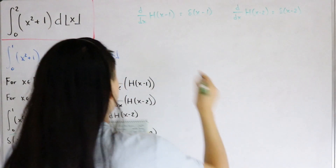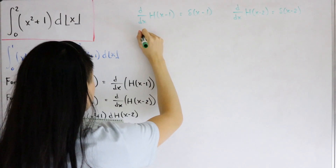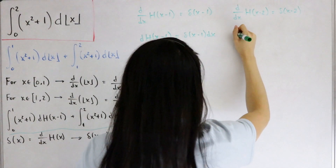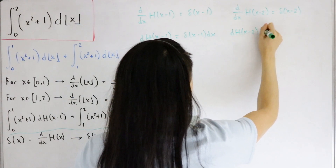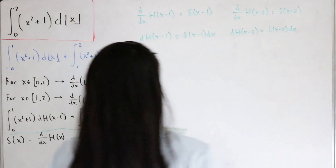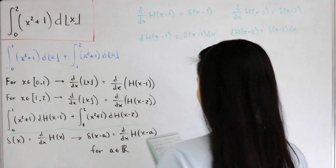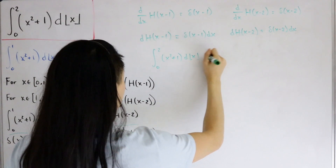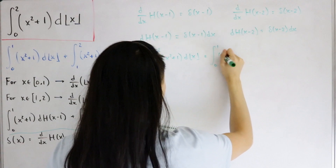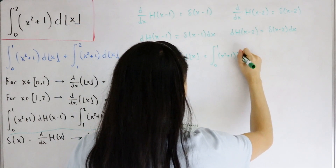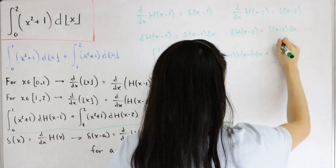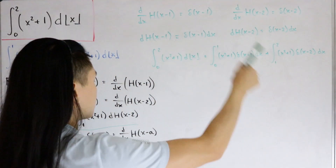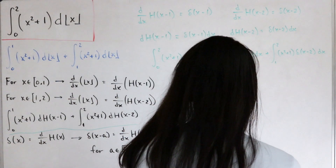Multiplying both sides by dx: d[H(x minus one)] = δ(x minus one) dx, and d[H(x minus two)] = δ(x minus two) dx. Substituting back, our original integral from zero to two of (x²+1) d⌊x⌋ becomes: the integral from zero to one of (x²+1)·δ(x minus one) dx, plus the integral from one to two of (x²+1)·δ(x minus two) dx.